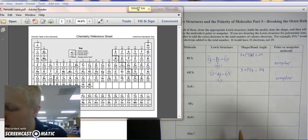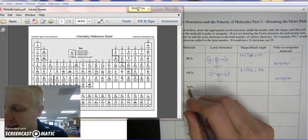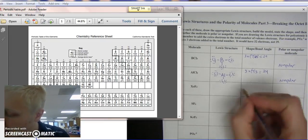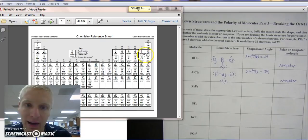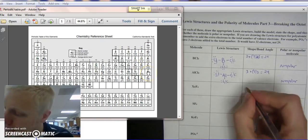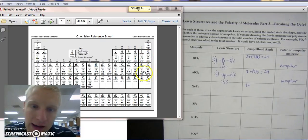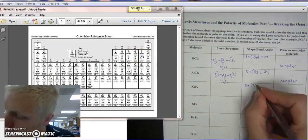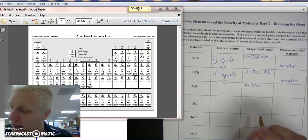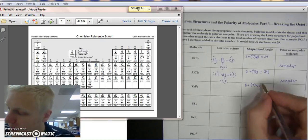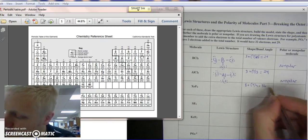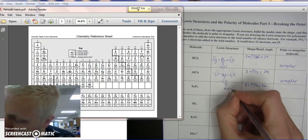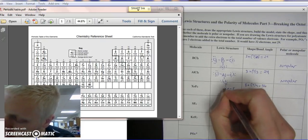Alright, doing another one. We've got xenon tetrafluoride. So I'm going to count xenon. It's a noble gas, so it has 8 outer electrons. And fluorine is a halogen, which has 7. There's 4 of them. 7 times 4 is 28, plus 8 is, what, 36. So xenon goes in the center. And then we have fluorine. Each has one bond to them, at least.